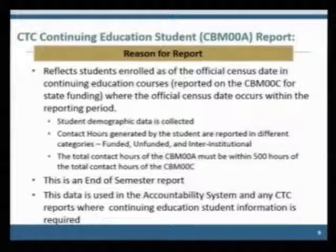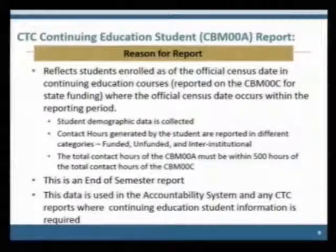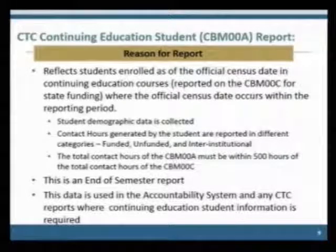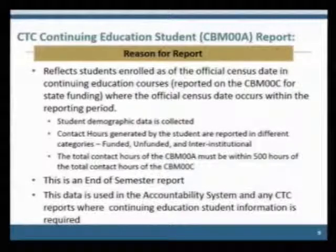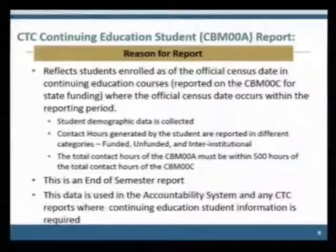Now we'll talk about the CMOA report — the continuing education student report. It reflects students enrolled as of the official census date in continuing ed courses. Student demographic data is collected, and contact hours generated by students are reported in different categories. Total contact hours on the A must be within 500 contact hours of the total contact hours reported on the C. This is an end-of-semester report, and the data is used in the accountability system and any CTC report where continuing ed student information is required.